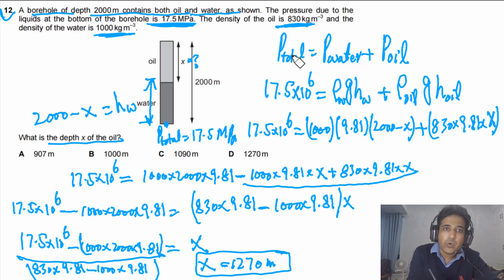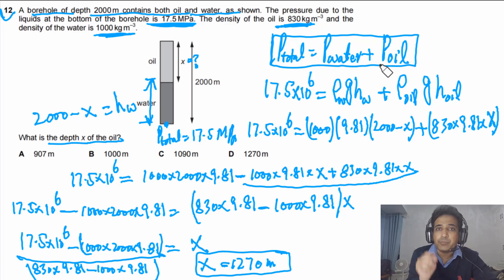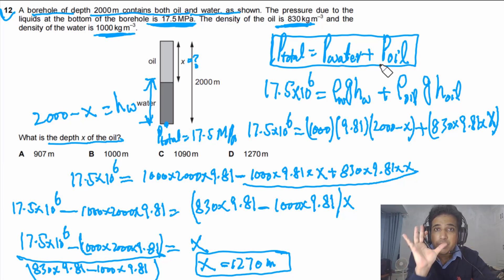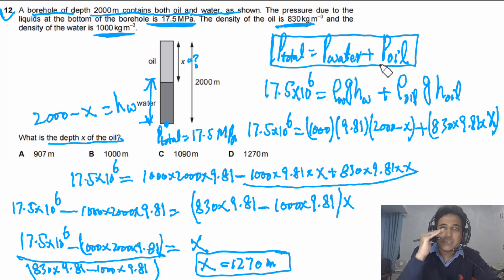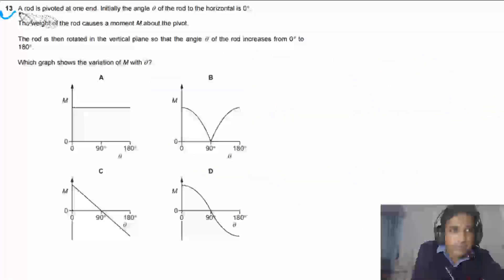The key concept here is that P_total is the sum of pressure due to water and pressure due to oil. Once that is understood, the rest is simplification. Question 12 answer: x ≈ 1270 meters.